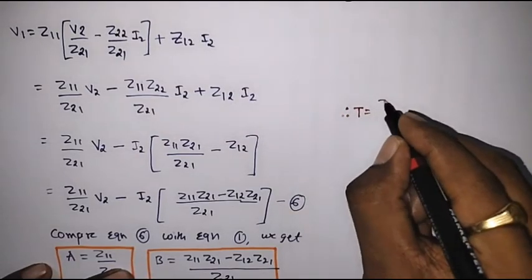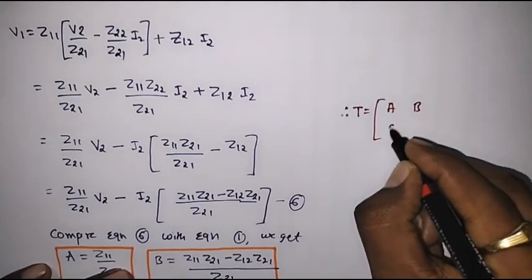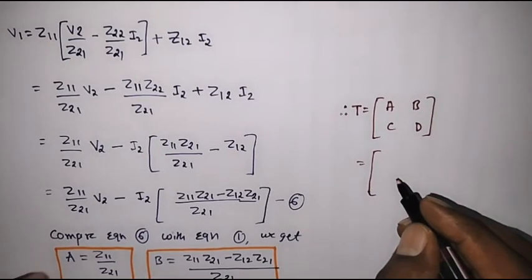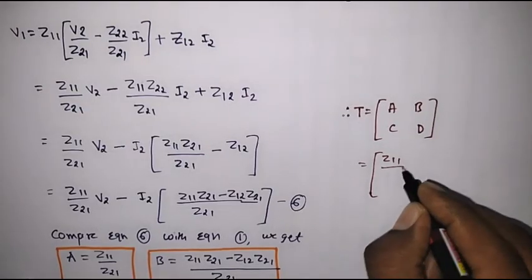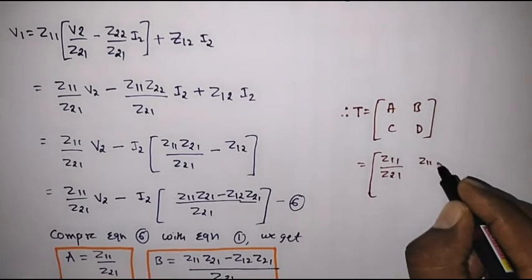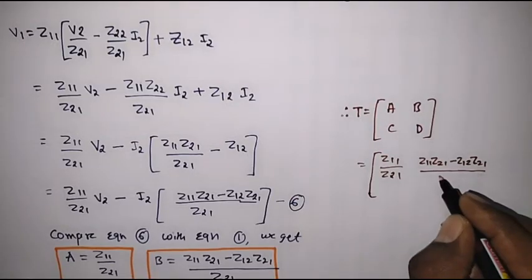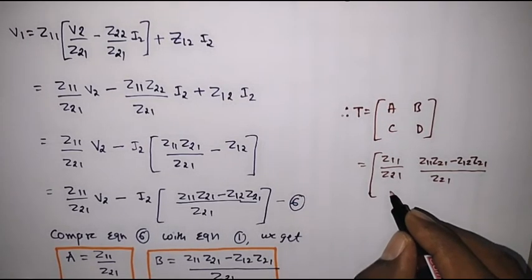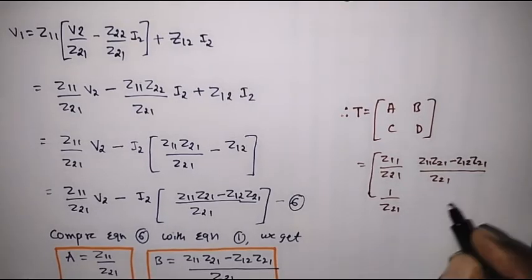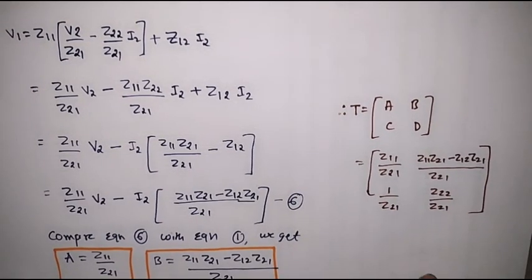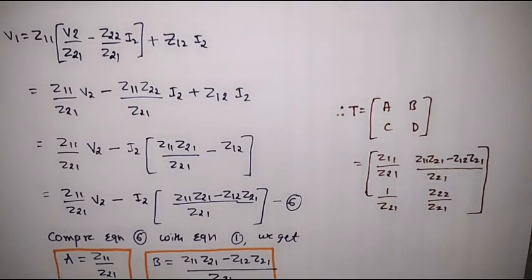In summary, the T parameter matrix [A, B; C, D] expressed in terms of Z parameters is: A equals Z11 over Z21, B equals (Z11·Z22 minus Z12·Z21) over Z21, C equals 1 over Z21, and D equals Z22 over Z21. This completes expressing the T parameters in terms of Z parameters. Thank you for watching.